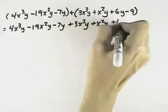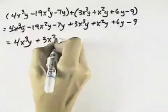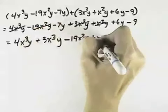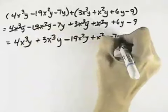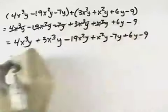And then in order to simplify this, what we want to look for is like terms. So we've got a 4x cubed y here, and then we have a 3x cubed y that's positive. Then we have a minus 19x squared y, and a plus x squared y, so there's two like terms. Then a minus 7y, and a plus 6y, and finally a minus 9.